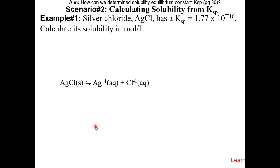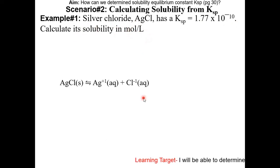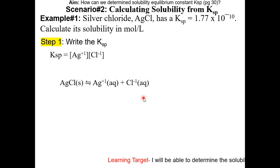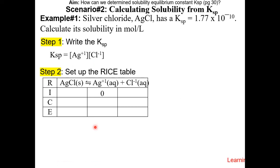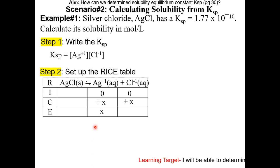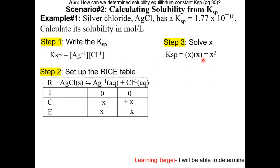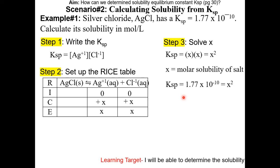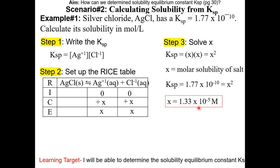For scenario 2, we'll be doing the opposite — calculating the solubility or molar solubility from Ksp. Silver chloride has a Ksp of 1.77 × 10⁻¹⁰. Calculate its solubility in moles per liter. The first step is to write out the Ksp expression: Ksp equals the concentration of silver ion times the concentration of chloride ion. Set up the RICE table — initially no silver or chloride ions. The change for each ion is positive X, so equilibrium concentration is X for each. Plugging in: Ksp equals X squared. Since Ksp equals 1.77 × 10⁻¹⁰, we take the square root of both sides and get X equal to 1.33 × 10⁻⁵ molar.